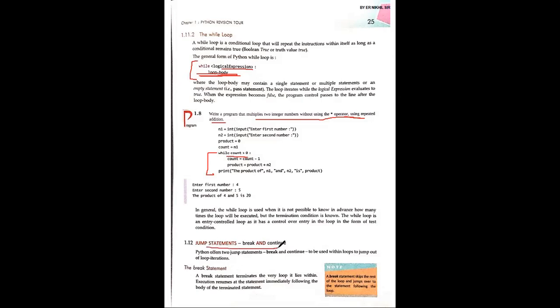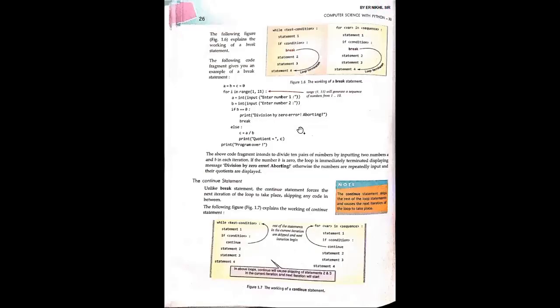Jump statements — break and continue. Break: when break is encountered, it skips the rest of the loop and jumps out of the loop entirely. Continue: it forces to the next iteration — whether the condition is true or false, it continues the loop but skips the current iteration. With break you go out of the loop; with continue you stay in the loop and move to the next iteration.